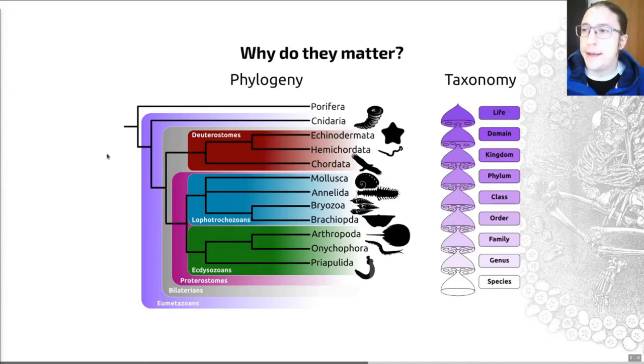So with that in mind, at the top here you can see the Porifera—those are sponges. Then below that we have the cnidarians, so these are corals and jellyfish and relatives. And below that we have the echinoderms, so these are sea urchins and starfish and close relatives. The next group is the hemichordates.